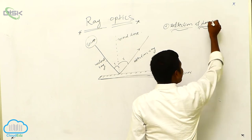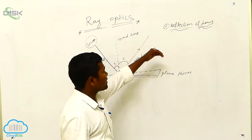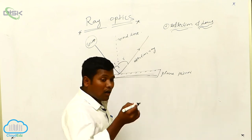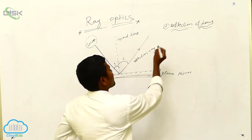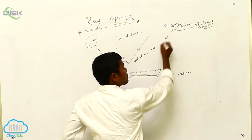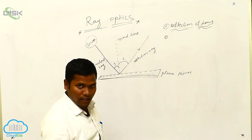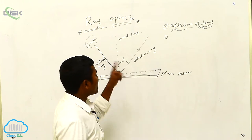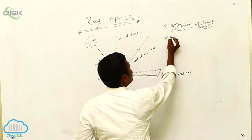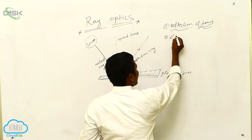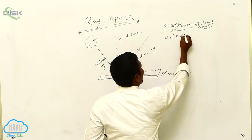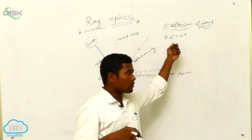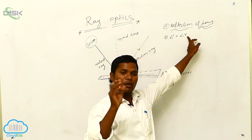These laws apply to sound as well, but here we are discussing optics. The laws of reflection — in physics and optics, there are two laws of reflection. The first one: angle of incidence is equal to angle of reflection. You may denote them as capital I and capital R also — no problem.